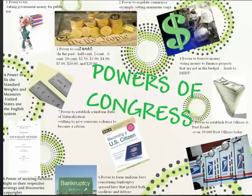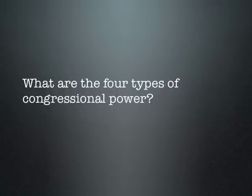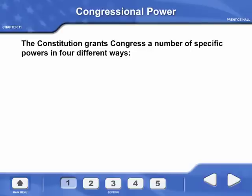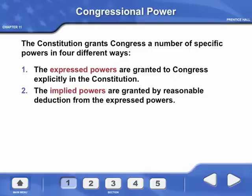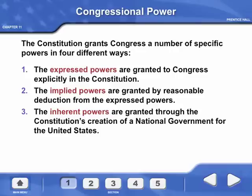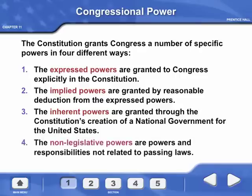This video lesson is on the powers of Congress. What are the four types of Congressional power? The Constitution grants Congress a number of specific powers in four different ways. First, we have express powers — they are granted to Congress explicitly in the Constitution. Second, we have implied powers — they are granted by reasonable deduction from the express powers. Third, inherent powers are granted through the Constitution's creation of a national government for the United States. And fourth, we have non-legislative powers — powers and responsibilities not related to passing laws.